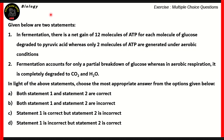Here's our first question, and this one's from biology. This question has two statements, and we need to find out the most appropriate answer from the options given. Statement 1: In fermentation, there is a net gain of 12 molecules of ATP for each molecule of glucose degraded to pyruvic acid, whereas only two molecules of ATP are generated under aerobic conditions. This statement is false — in anaerobic respiration, only two molecules of ATP are gained, not 12. In aerobic conditions, since there is a complete breakdown of carbohydrate into carbon dioxide and water, more ATP molecules are generated. So the first statement is incorrect.